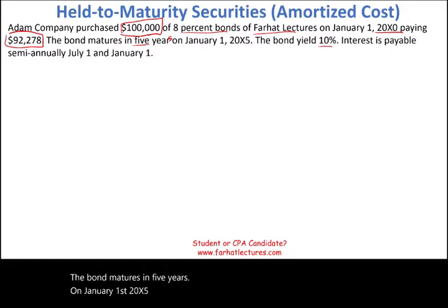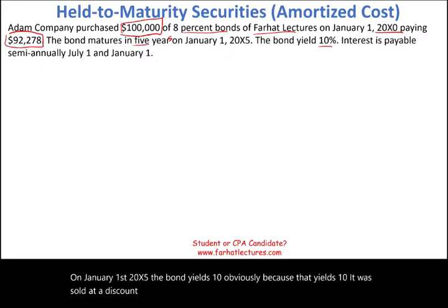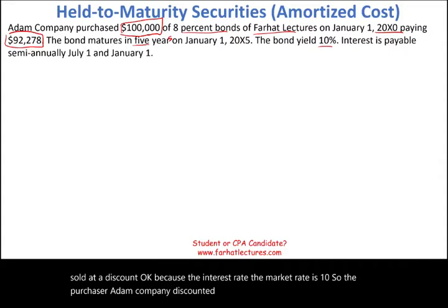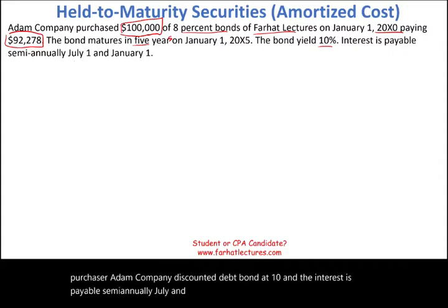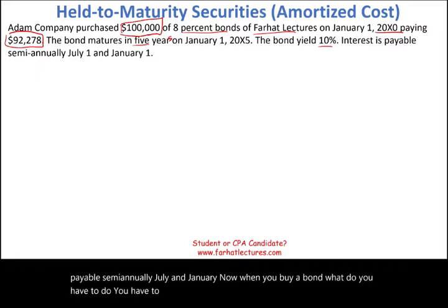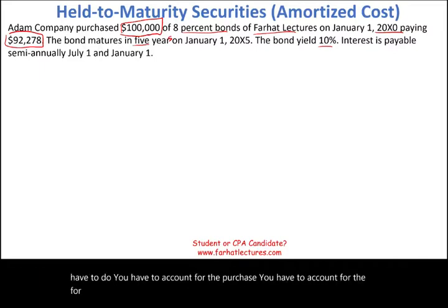The bond yields 10%. Because the market rate is 10%, it was sold at a discount. Adam Company discounted that bond at 10%, and the interest is payable semi-annually in July and January. When you buy a bond, you have to account for the purchase, account for any interest received, and if you sell the bond, you account for the gain or loss.